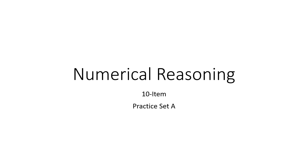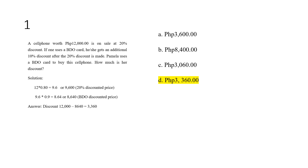For this video we will learn a 10-item numerical reasoning practice set. For number one, we will have to account for the final discount of a ₱12,000 cell phone discounted first at 20 percent, then an additional 10 percent after the 20% discount. We will look for the discounted price at 20%, so that will be 12 times 0.8.